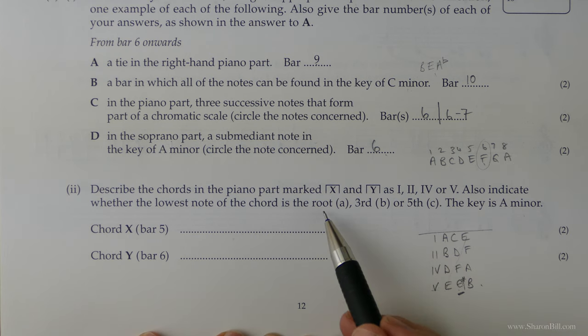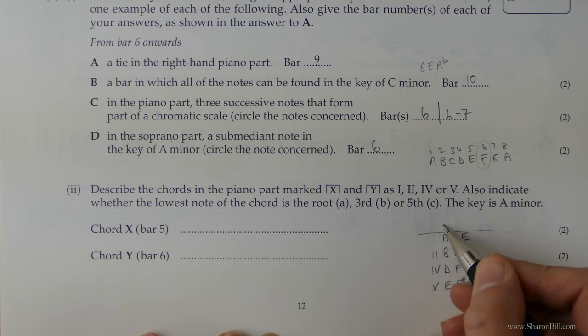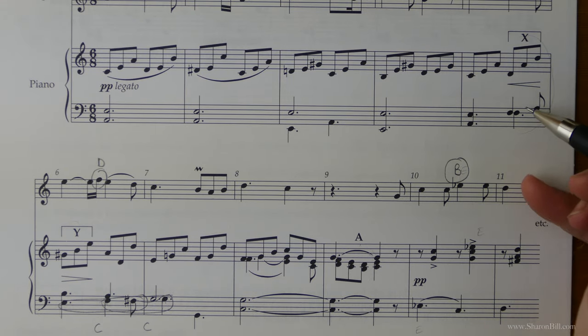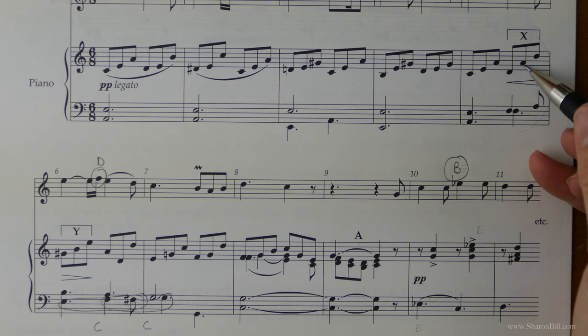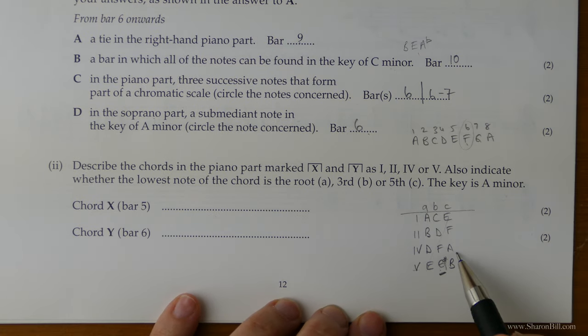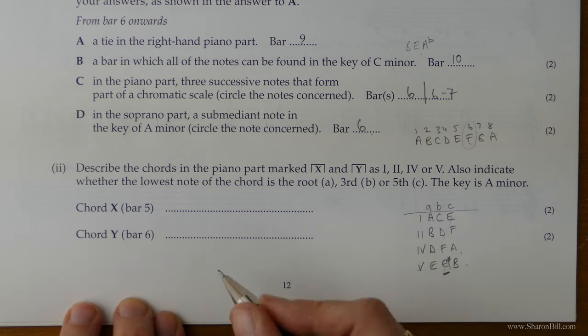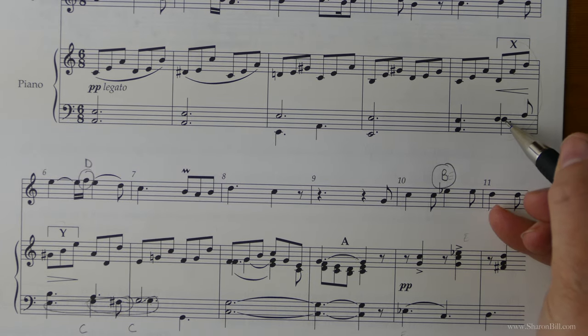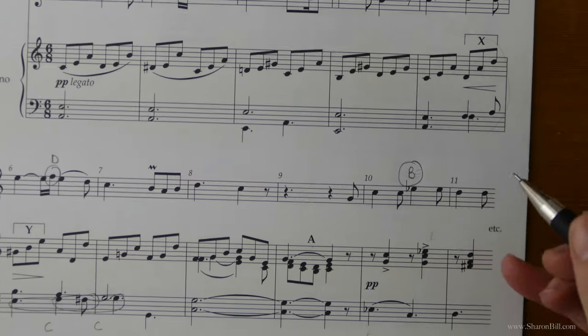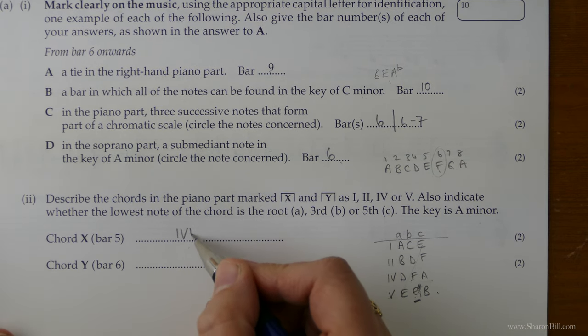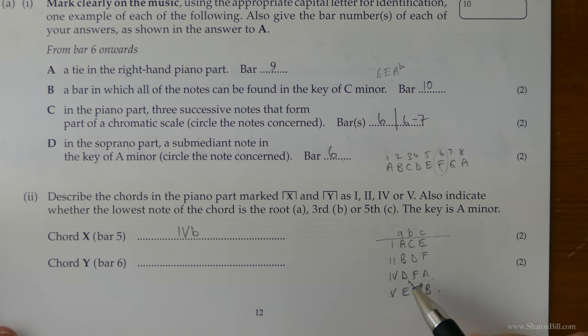Now we need to also show what position, what inversion the chord is in. So there's our bass note, first inversion, second inversion. So let's have a look what notes we've got. So chord X we have an F, a D, an A, a D, and an A. And so all of those notes form part of chord IV. So chord IV will answer that. So that's the first part completed. Now we need to say which position that's in. So our bass note is an F. And so we can see that that's the middle of the chord, it's position B. It's the first inversion. So because we have an F in the bass, it's a 4B.